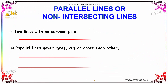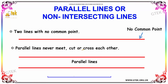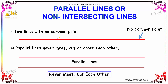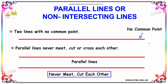Parallel lines are also called non-intersecting lines. If two lines do not have a common point, then they are said to be parallel lines. Parallel lines never meet, nor do they cut or cross each other. So these two are parallel lines.